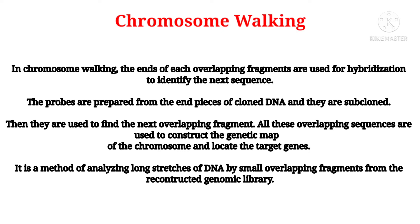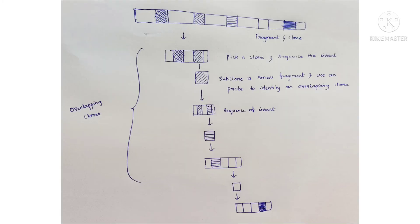Let us now discuss the various steps involved in this process of identifying a clone. Observe the picture carefully so that you will understand each step easily. From the genomic library, a clone of interest of 20 KB long, identified by a probe, is selected.